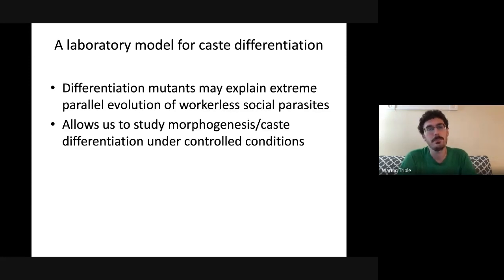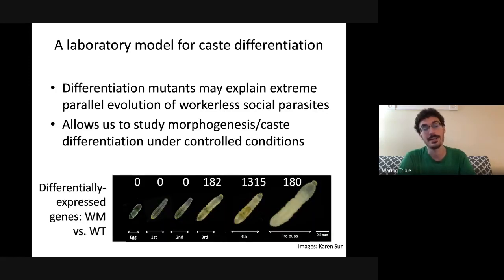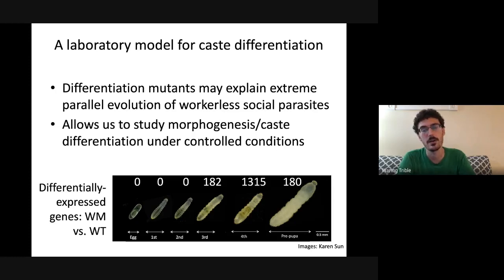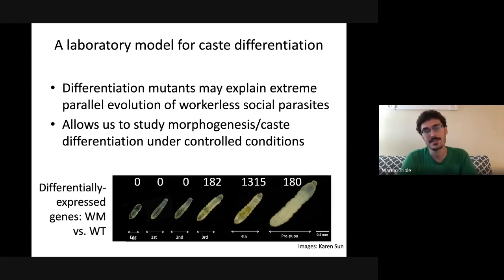A critical point is that there are no differentiation mutants or all-queen species who can survive on their own — species exhibiting queen-like traits at worker-like body size are universally parasitic. Something like the winged mutant might immediately go extinct, but it can't evolve into a free-living organism; it would have to acquire mutations to evolve into a parasite. Less speculatively, these winged mutants are a useful laboratory reagent to study morphogenesis and caste differentiation under controlled, highly replicated conditions. An RNA-seq study across six time points showed no differential expression in early development, but a huge peak at the fourth instar when wings and ovaries are forming.